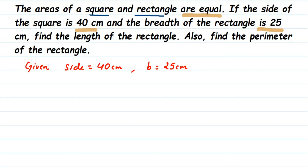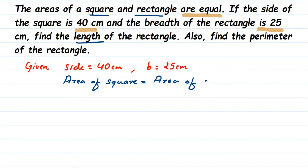We have to use the equal areas condition to find out the length, and using that we'll find out the perimeter, because to find the perimeter we need both length and breadth. So the first step is to find the length. Area of square equals area of rectangle — it's given. The formula for area of square is side × side, and the formula for area of rectangle is length × breadth.